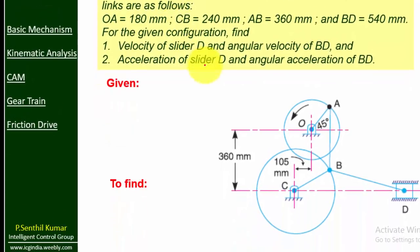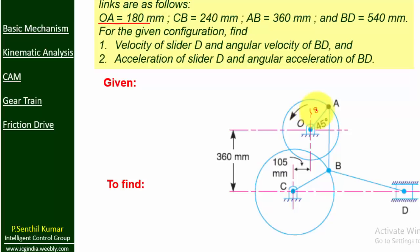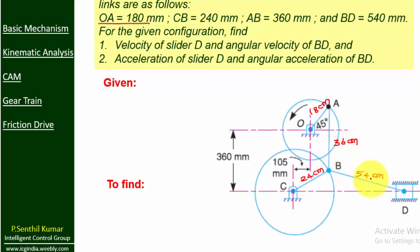This is an example for a toggle mechanism. The given parameters are: OA = 180 mm (18 cm), CB = 24 cm, AB = 36 cm, BD = 54 cm. The vertical distance between O and C is 10.5 cm, and the horizontal distance between O and C is 36 cm. These are the parameters.